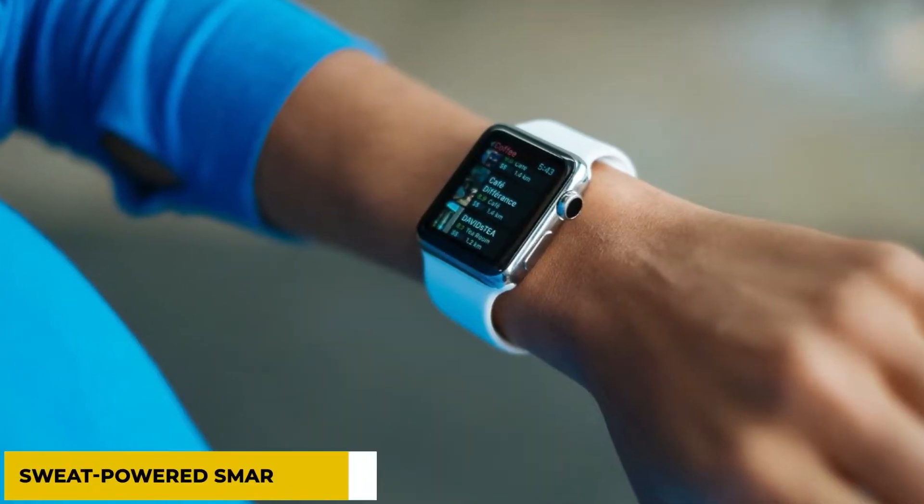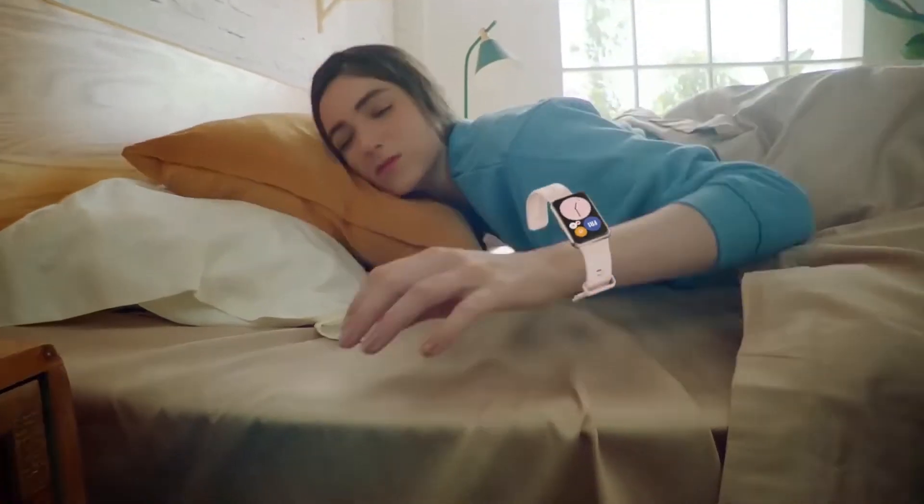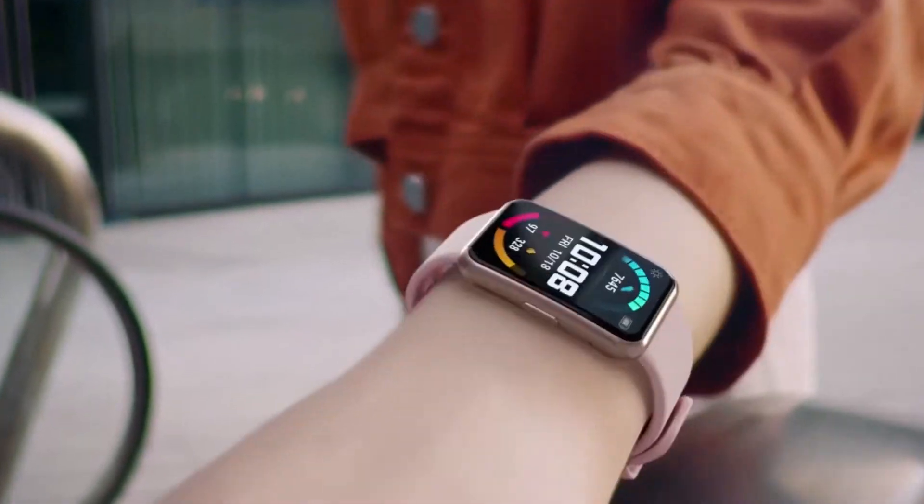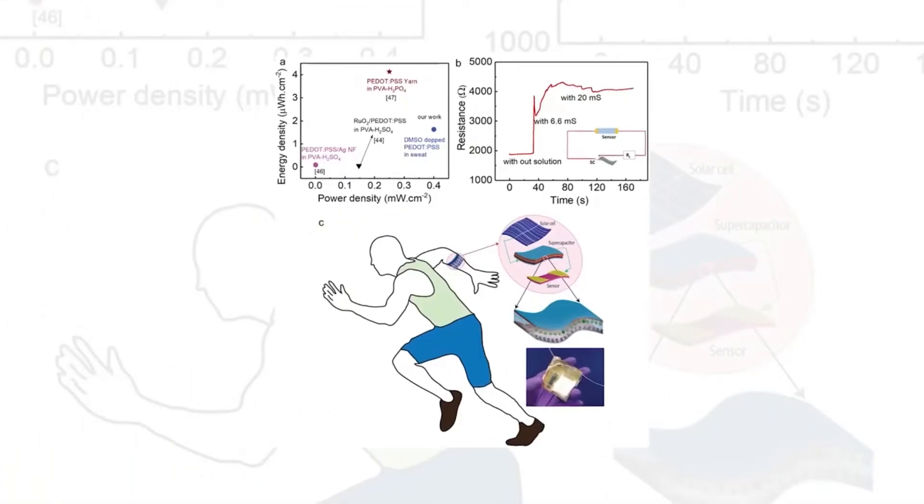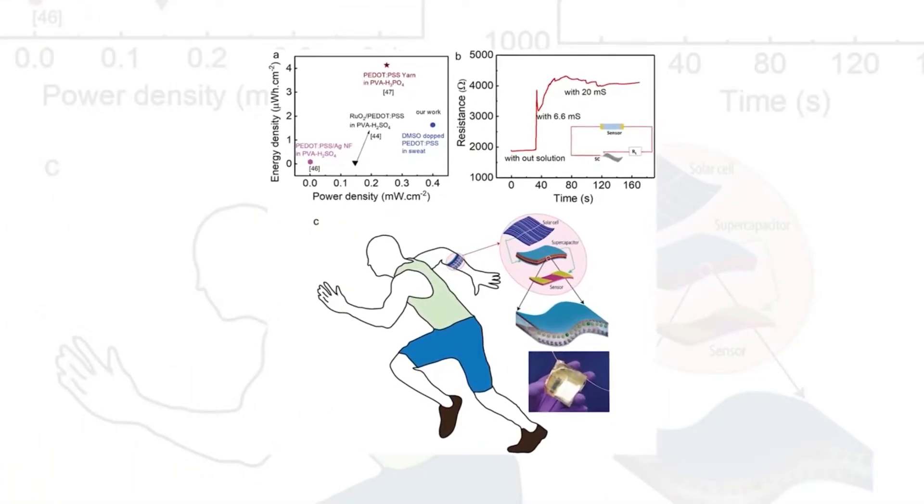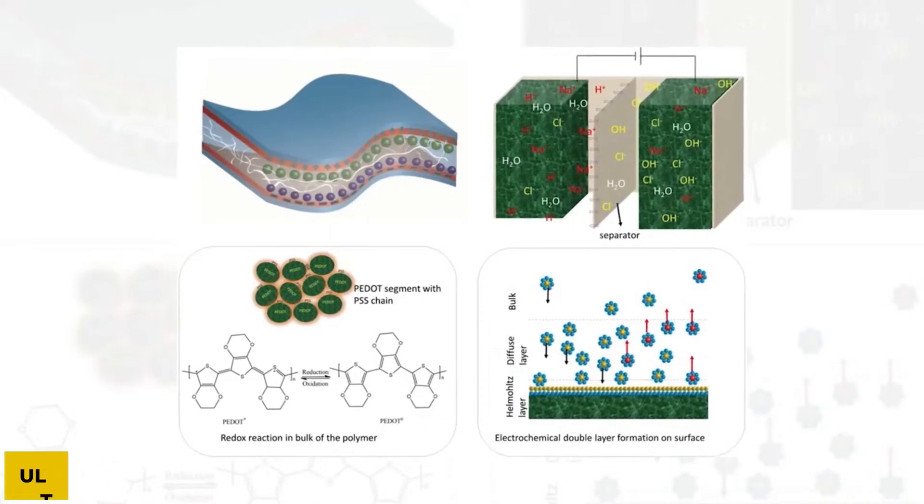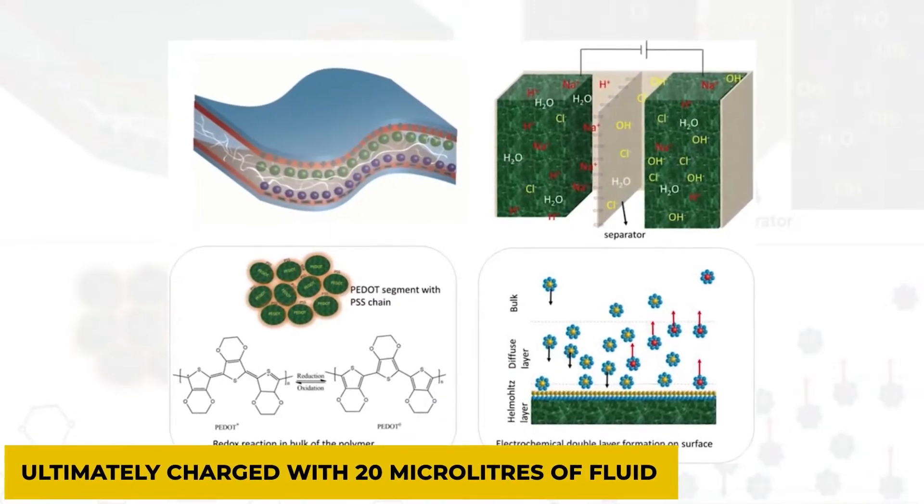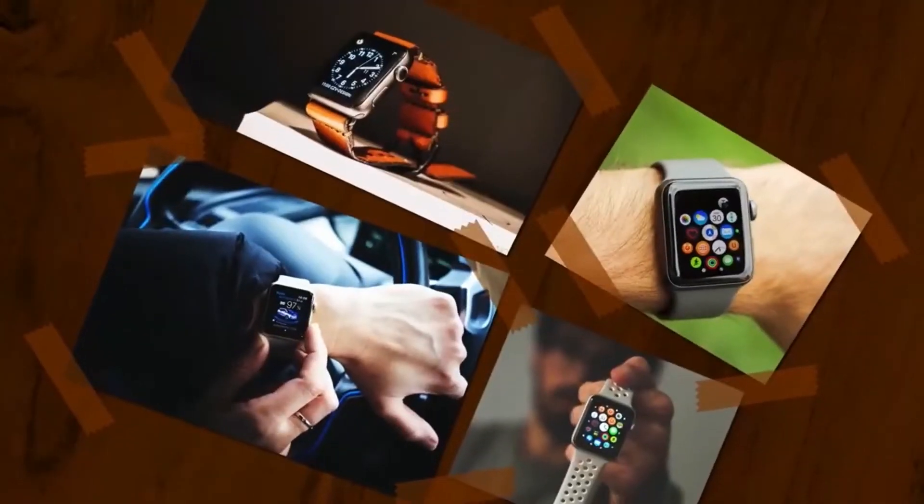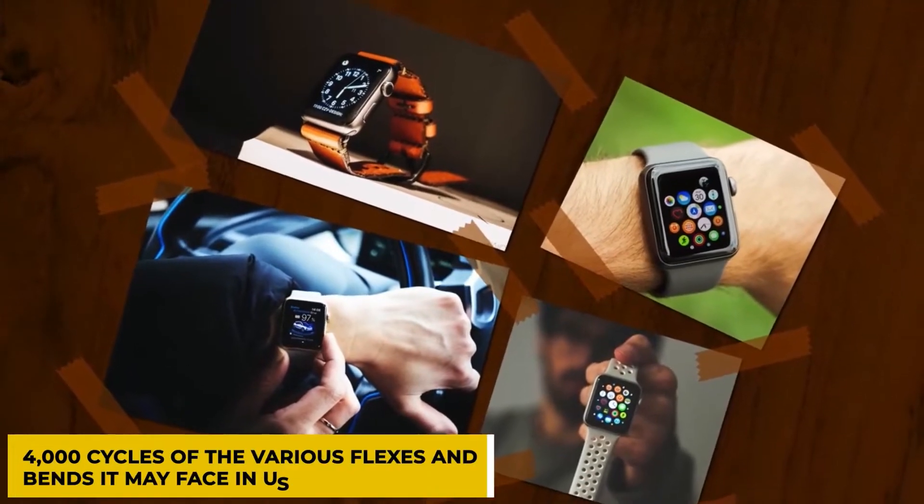Number 3: Sweat-Powered Smartwatches. Engineers at the University of Glasgow have created a flexible supercapacitor that stores energy by using sweat instead of the electrolytes used in traditional batteries. It may be ultimately charged with 20 microliters of fluid and is strong enough to withstand 4,000 cycles of the various fluxes and bends it may face in usage.